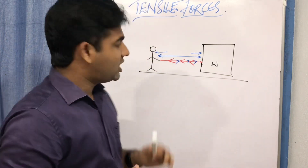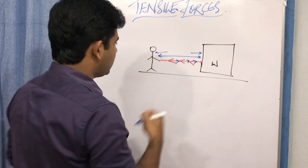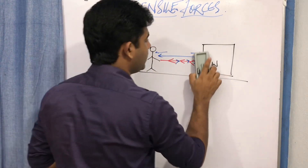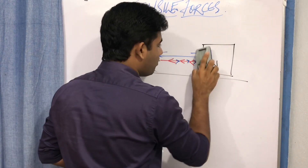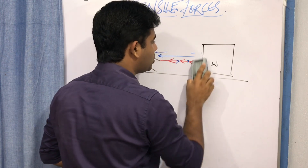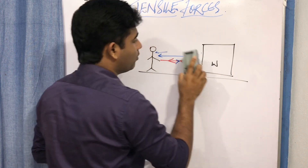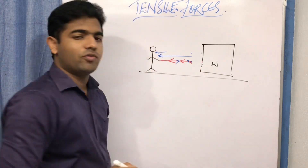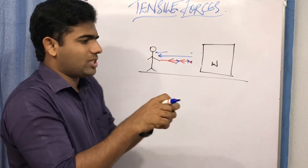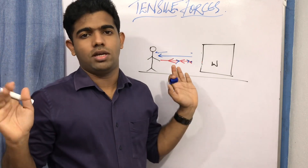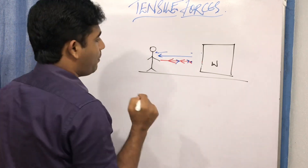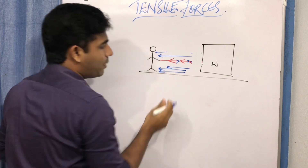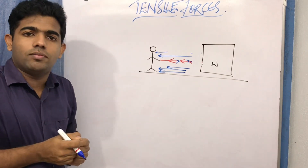To understand that, think of this example: I am standing here but my rope is not attached to the wooden block — the block is there but the rope just got untied from it. Now if I try to pull the rope, what happens? The rope will come to me.